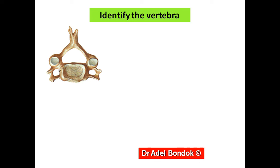These are cervical vertebrae. It is cervical because it has a foramen in the transverse process and a typical short bifid spine. This is the typical cervical vertebra, which applies to numbers three to six.